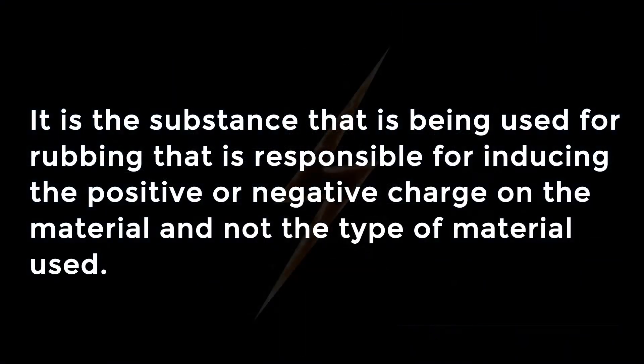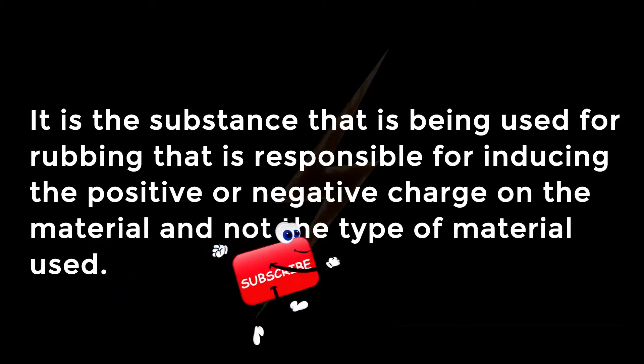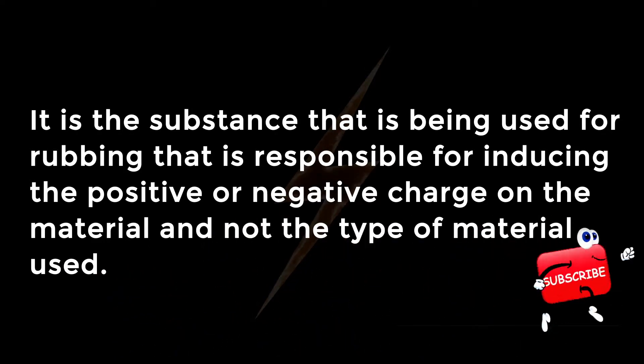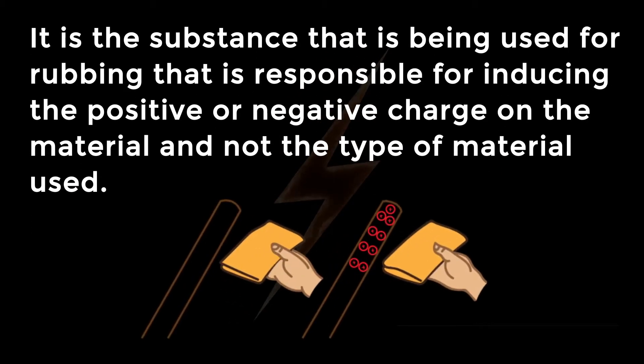It is the substance that is being used for rubbing that is responsible for inducing the positive or negative charge on the material, and not the type of material used. For example, if the glass rod is rubbed with flannel cloth it becomes negatively charged, but when it is rubbed with silk it becomes positively charged.